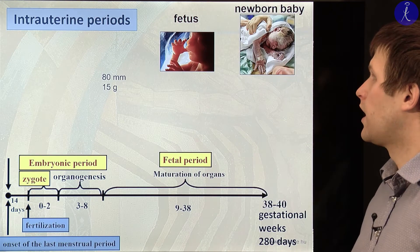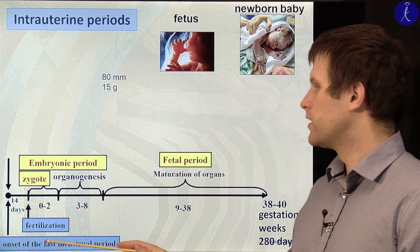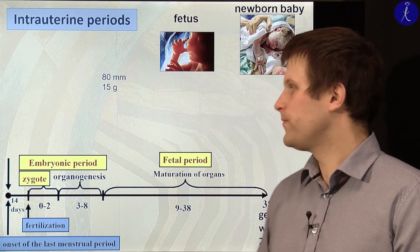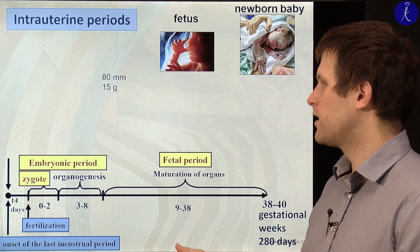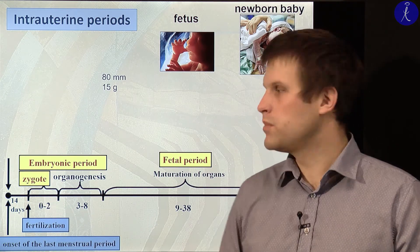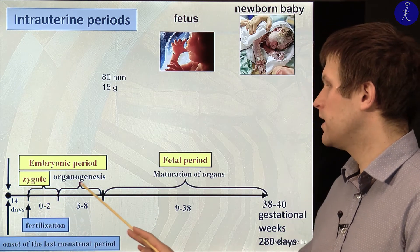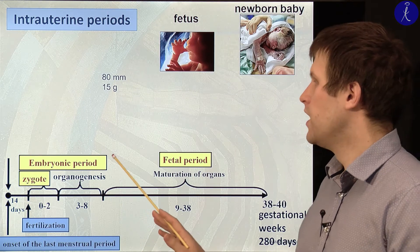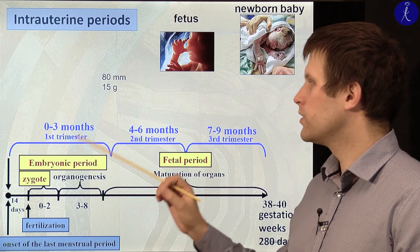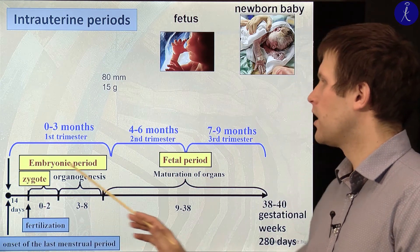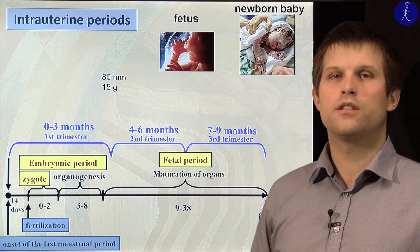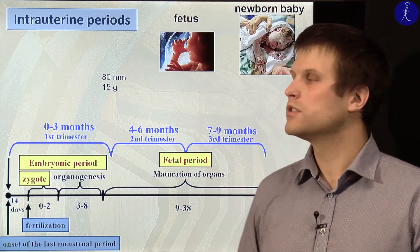Let's revise first the intrauterine periods. We have the onset of the last menstrual period and around the 14th week we have ovulation. Shortly after ovulation we have fertilization, and from fertilization the first two weeks is called the zygote period. From day zero until the end of the 8th week is the embryonic period. The entire intrauterine life is divided into three trimesters — the first, second, and third — each corresponding to three months.